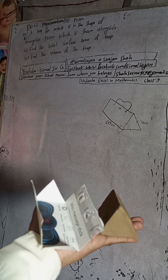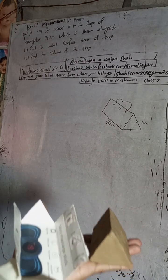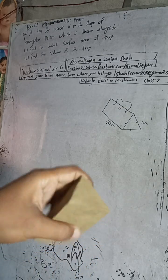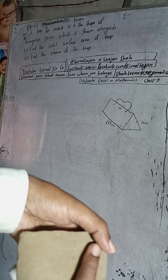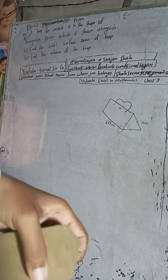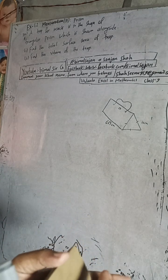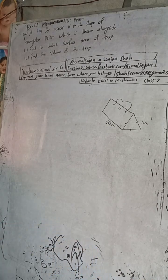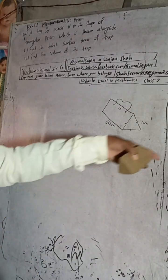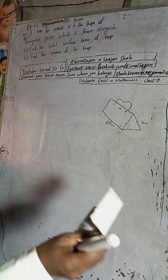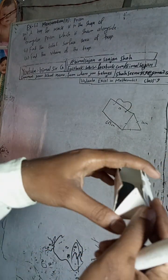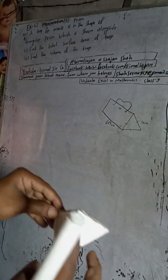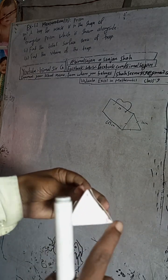I will solve this by experimental demonstration. This is the prism - it has a triangular base shape. The base will be triangular, the top face is also triangular, and there are three rectangular surfaces. This is a rectangular surface with a triangular side, another rectangular face with a triangular side, and a third rectangular face. This figure can be unfolded, and when we close it back, it forms the triangular prism shape.